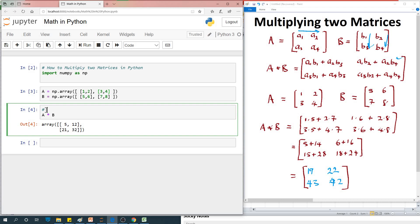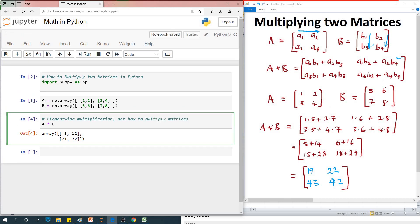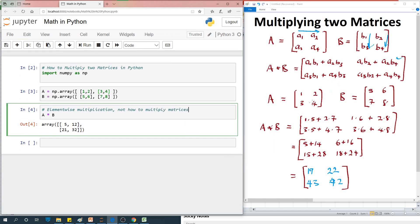This gives us element-wise multiplication, and that is not what we want - not how to multiply matrices. This is telling us five times one. If we go back to the matrices on my blackboard, we have one times five equals 5, two times six equals 12, three times seven equals 21, and so on. This does not have much significance in mathematics or in matrices.